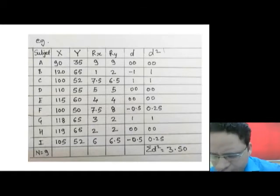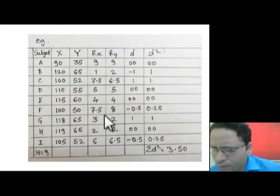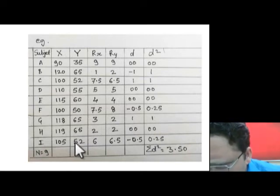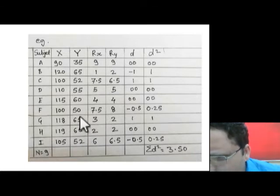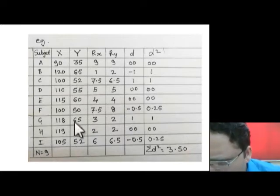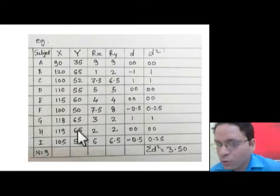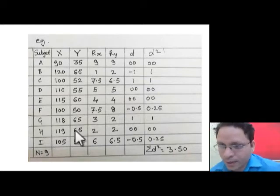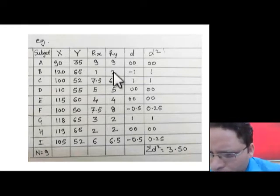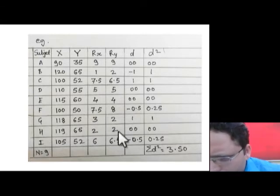Now we make the Ry column for Y in the same way. The highest number is 65, which appears three times. Those three entries would occupy ranks 1, 2, and 3, but since the values are identical we calculate (1 + 2 + 3) / 3 = 6 / 3 = 2. So we write rank 2 for all three entries. After 65, the next value gets rank 4, so 60 gets rank 4.